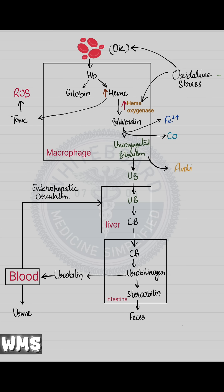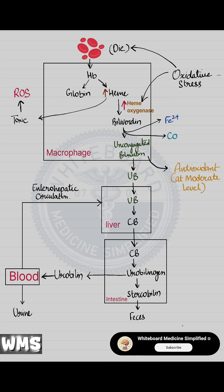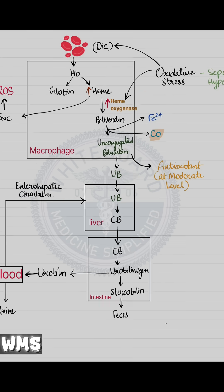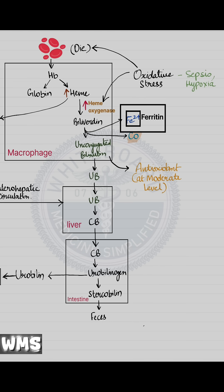At moderate levels, bilirubin acts as a natural antioxidant, helping to reduce oxidative stress. Additionally, this process produces carbon monoxide and ferritin. Ferritin binds free iron released from heme breakdown, preventing further oxidative damage.